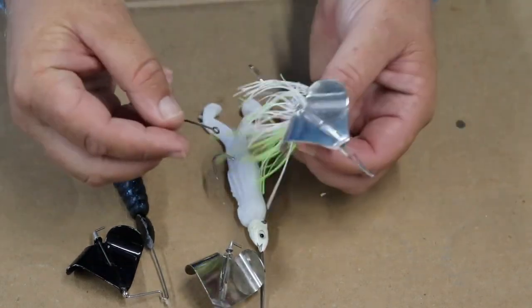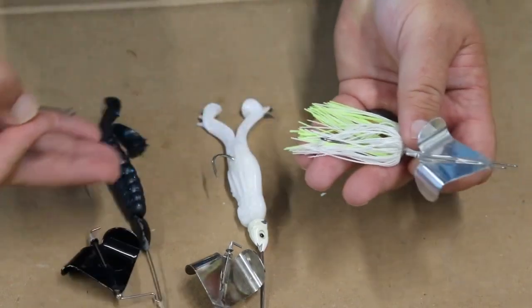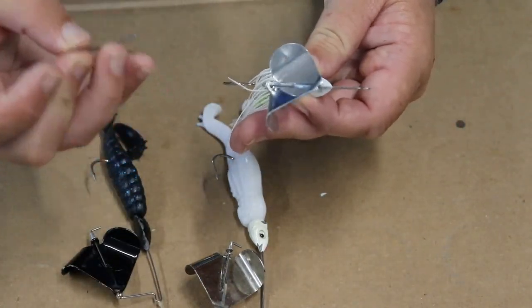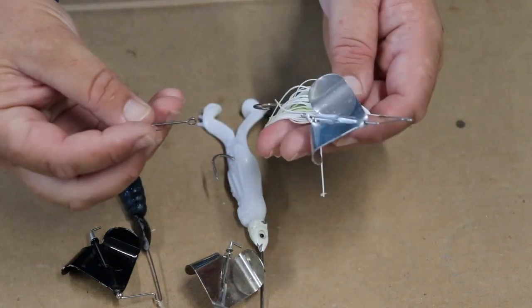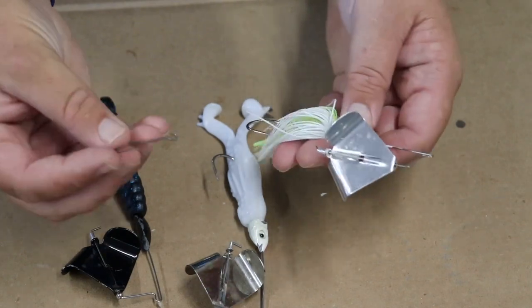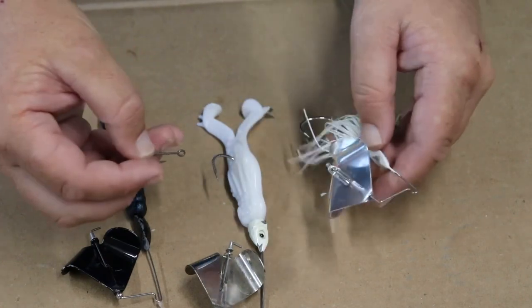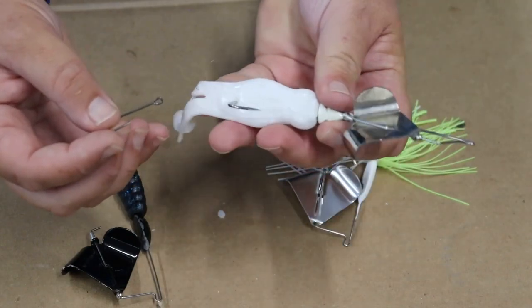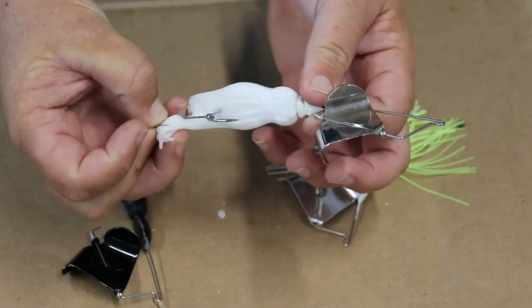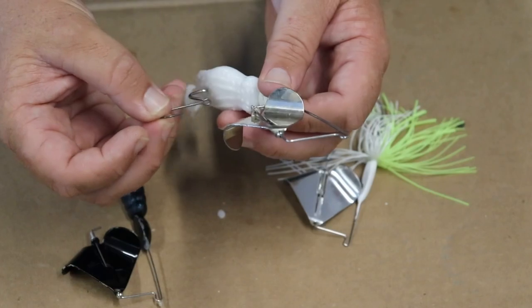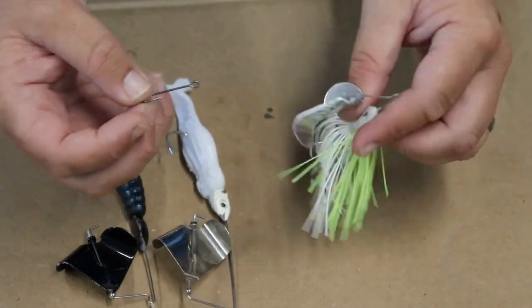But yeah, so added action, being able to skip, and also planing to the surface very quickly. Those are all advantages to throwing a toad bait as your trailer. But let's go back to the traditional skirt. The one situation nowadays, now that I've realized all the benefits of throwing a toad on a buzzbait, the one situation that I like to keep a skirt on a buzzbait, as opposed to using a trailer like the goat toads, is when I need to use a trailer hook. When I'm having a hard time hooking those fish, the problem with a trailer hook with a toad trailer like this is the fact that when you put this thing on, man, these legs are constantly going to be getting stuck in that trailer hook.